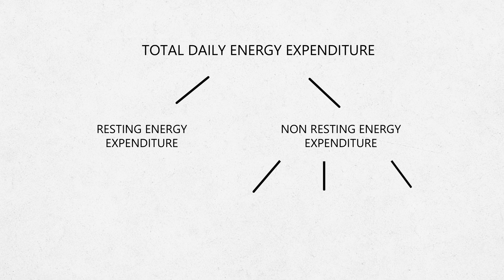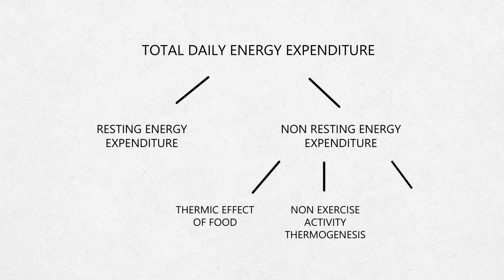This component is then broken down into three different subcomponents. The first is your thermic effect of food, or TEF. This is the amount of energy you expend through digesting food. Whenever you consume something, that food needs to be broken down, and in order for it to be broken down, it needs energy. The second component is your non-exercise activity thermogenesis, or NEAT. This is the amount of energy you expend during general activity — whenever you type on a keyboard, write something down, paint a fence, or anything similar, you're also expending energy.